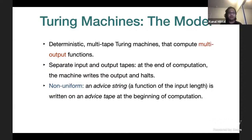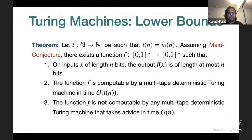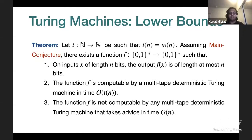We also allow the machines to be non-uniform, meaning they are allowed an advice string, which is a function of only the input length and is written on a separate advice tape at the beginning of computation. Our main result is: let T be any super-linear function. Then, assuming what we call the main conjecture, there exists a function F mapping n-bit inputs to at most n bits of output. F is computable by deterministic multi-tape Turing machines in time T, but F is not computable by any multi-tape deterministic Turing machine in linear time, even with advice.